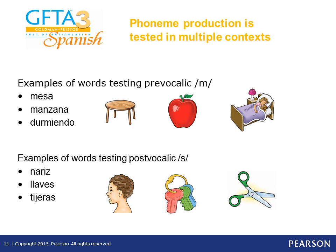Here is an example showing multiple contexts in which a phoneme is tested. For the prevocalic M, we have the words mesa, manzana, durmiendo — you can see the complexity level of the word increases with more syllables. Examples of words tested in a post-vocalic S position include nariz, llaves, and tijeras.